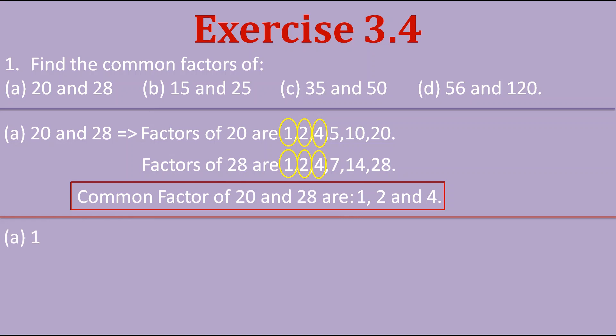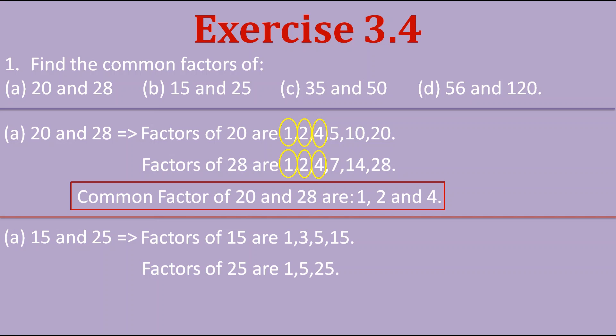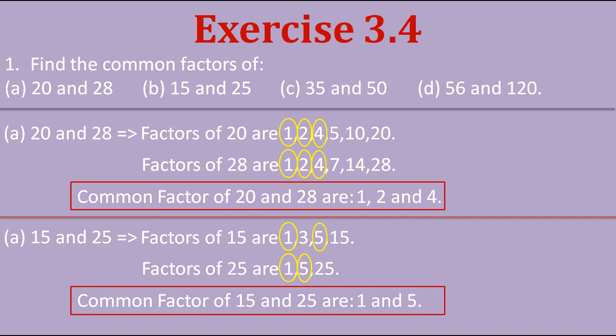Next, find the common factors of 15 and 25. The factors of 15 are 1, 3, 5 and 15, and the factors of 25 are 1, 5 and 25. Looking carefully, 1 and 5 are common. So the common factors of 15 and 25 are 1 and 5.